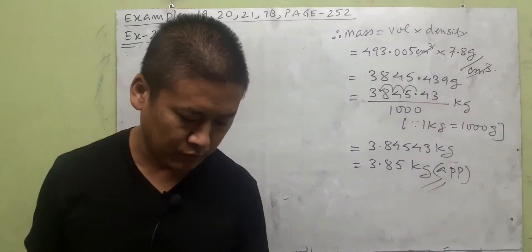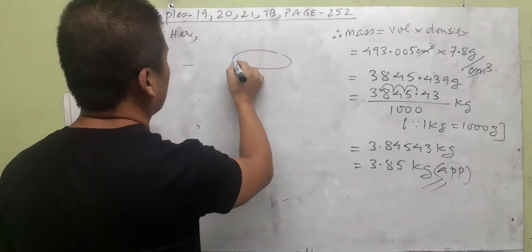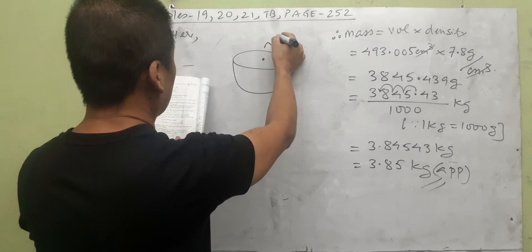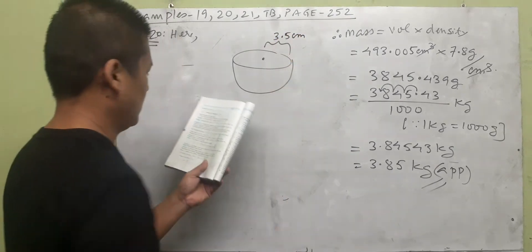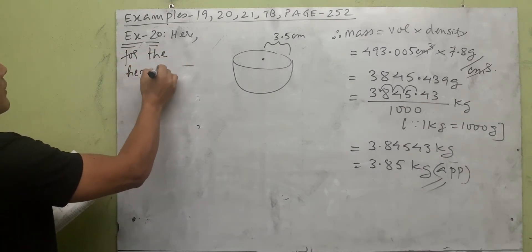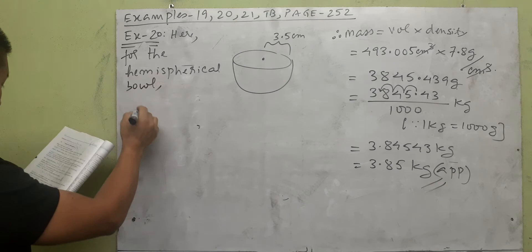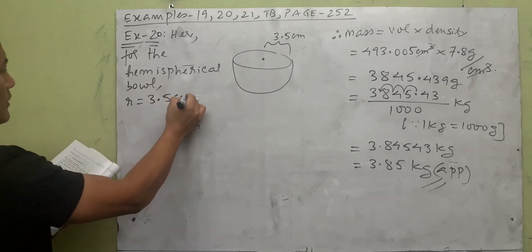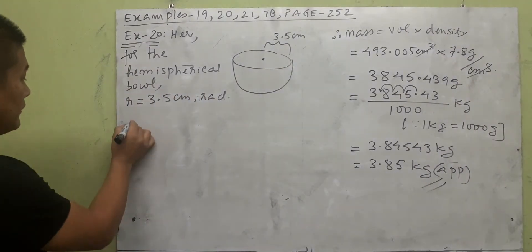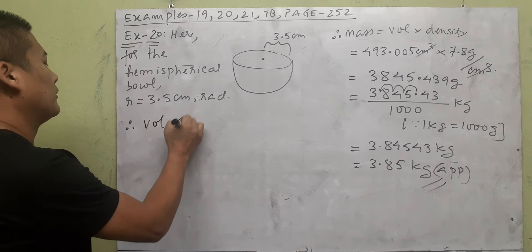That's our first answer. Now example 20: a hemispherical ball has radius 3.5 centimeters — what volume of water could it contain? A hemisphere is half of a sphere, like a bowl. The radius goes from the center to the rim: r = 3.5 centimeters.